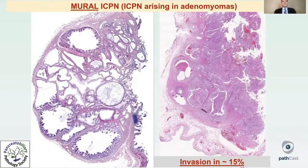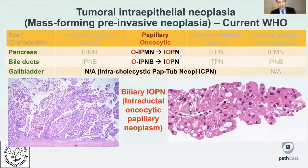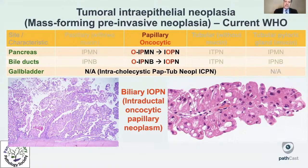There is a spectrum of these mural ICPNs: some are more cystic and less complex with less atypia, whereas others show significant architectural complexity, cytologic atypia, extensive high-grade dysplasia, and carcinoma. In about 15% of cases, invasive carcinomas are also detected in these adenomyoma-associated intracolecystic neoplasms.